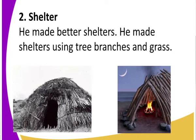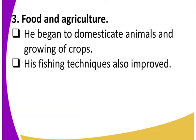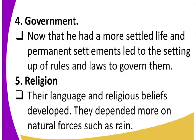How did man obtain his food? Did he take part in agriculture? Yes, he did. Man domesticated animals and grew crops. The first animal to be domesticated by man was the dog. His fishing techniques also greatly improved. There are more developments in the new stone age compared to the early and middle stone age periods.